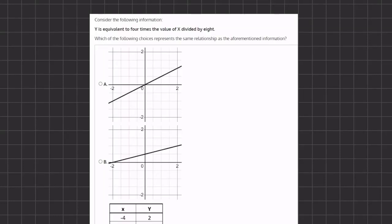In this question, we have to consider the following statement and see which one of the following options represents the same relationship. Let's read the statement. Y is equivalent to 4 times the value of X divided by 8. Now, if we simplify this, we have Y equals X divided by 2, because we can divide 4 and 8 by 4.